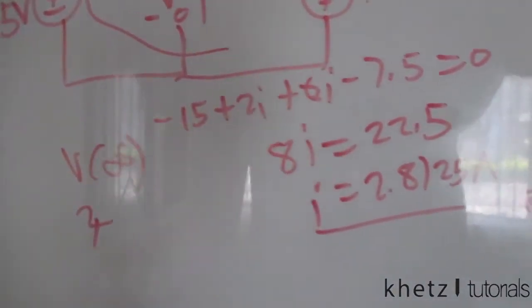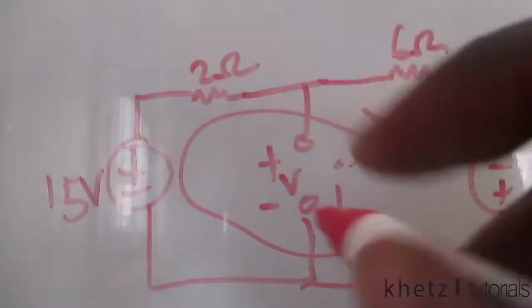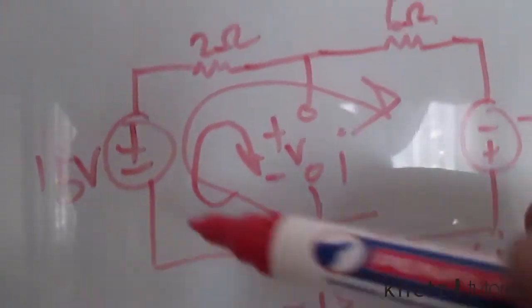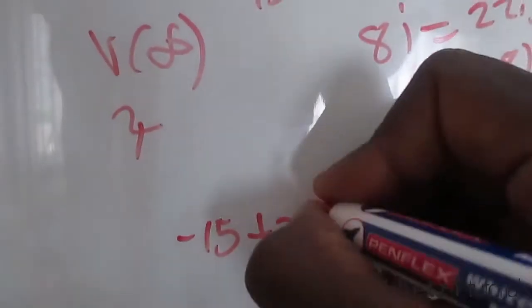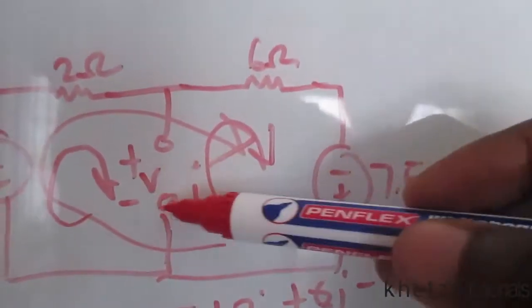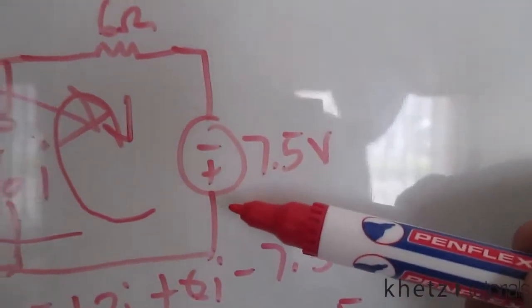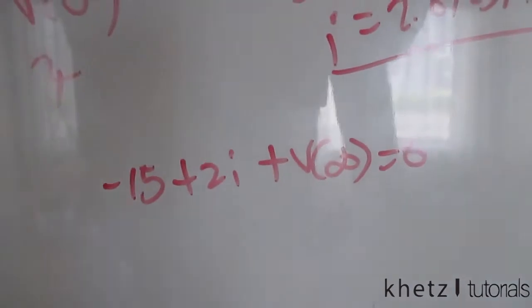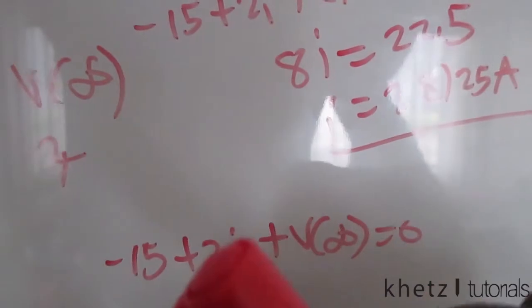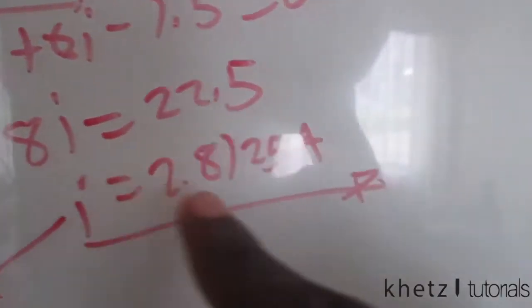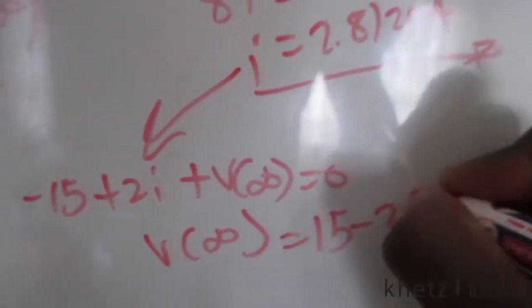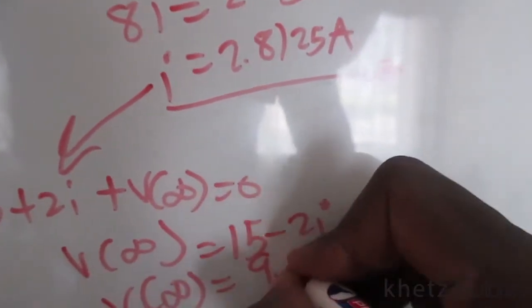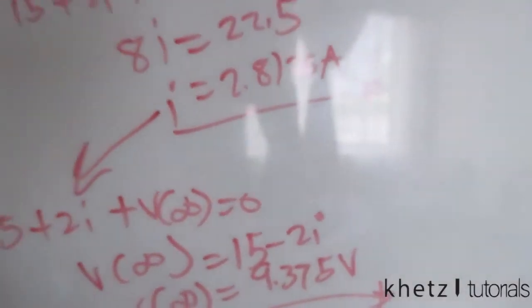Using this current to find v(∞), we write KVL around the small loop: negative 15 plus 2i plus v(∞) equals zero. Alternatively, starting from the other side: negative v plus 6i minus 7.5 equals zero — both give the same answer. Substituting i = 2.8125, v(∞) = 15 minus 2i = 9.375 volts.